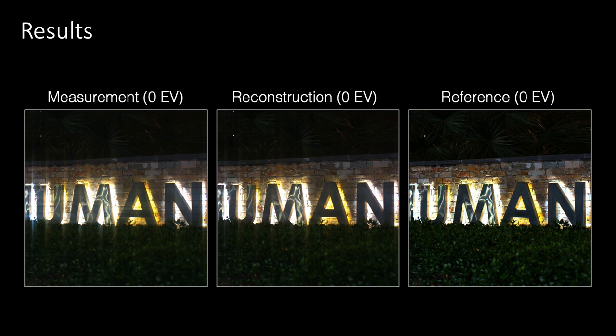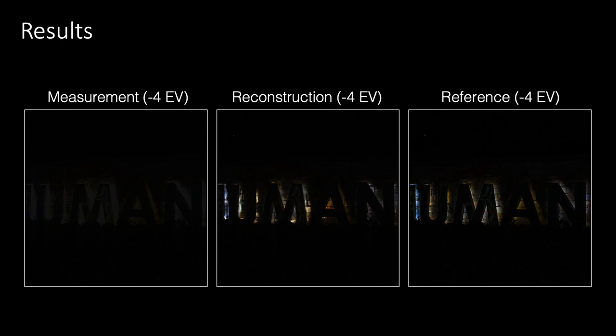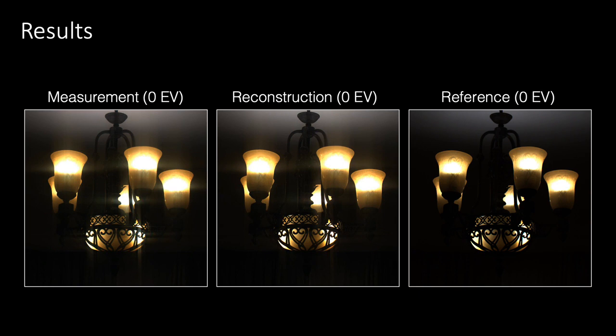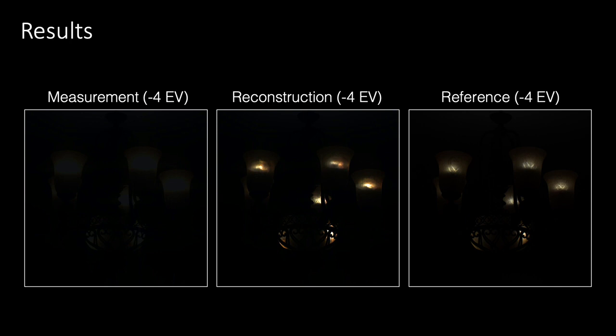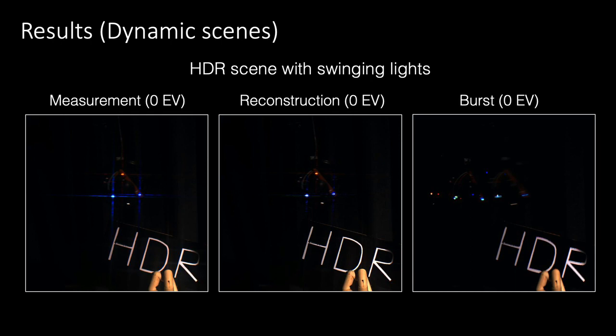We now present our HDR capture results. Note the encoding streaks in the sensor measurement. Our technique reconstructs dynamic HDR scenes without the artifacts introduced by traditional burst methods. This scene consists of a swinging pendulum with lights.